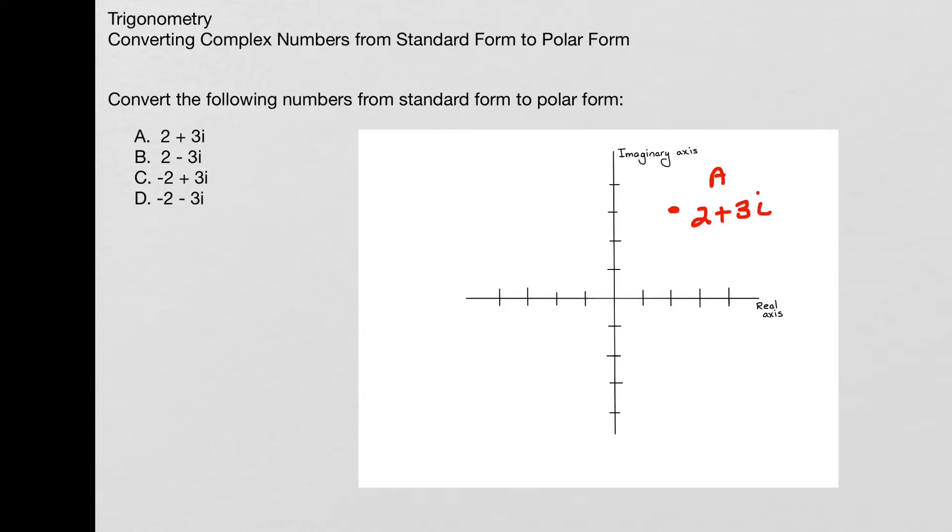And B is 2 minus 3i, so we'll go in the opposite direction for y, right down there. This is B, 2 minus 3i. And then in C, we have negative 2 plus 3i, so that's quadrant 2. And finally in D, we have negative 2 minus 3i, and there's about where we're talking, negative 2 minus 3i.